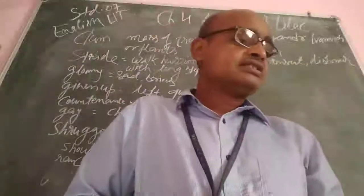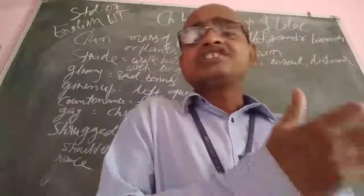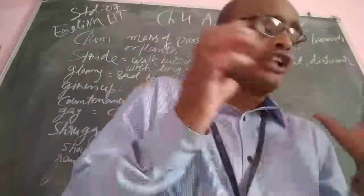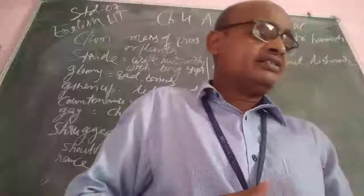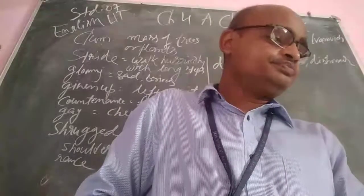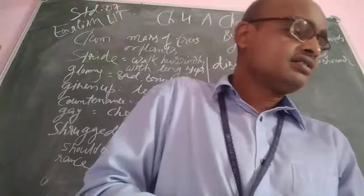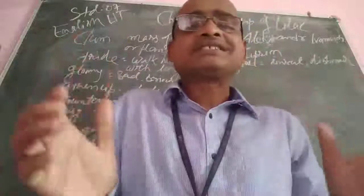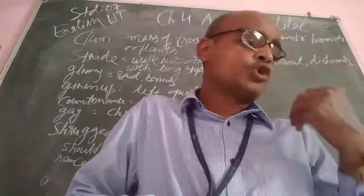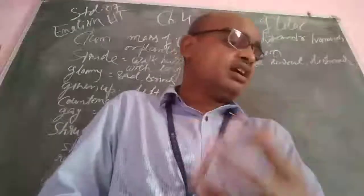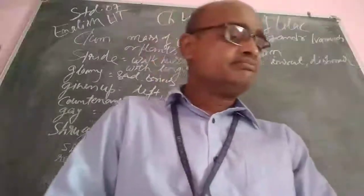Alexander Ivanovich Kuprin has written many novels and short stories — you can say he is an explorer as well. His novel 'The Duel' was very famous and is still liked by many people. His famous short stories include Moloch, Alicia, Junior Captain, Ravnikov, the Garnet Bracelet.